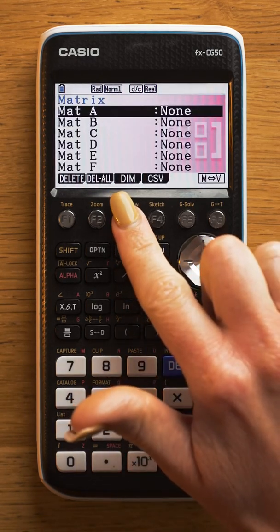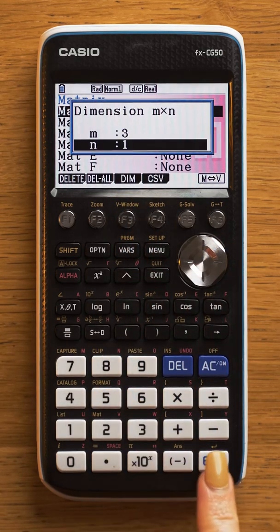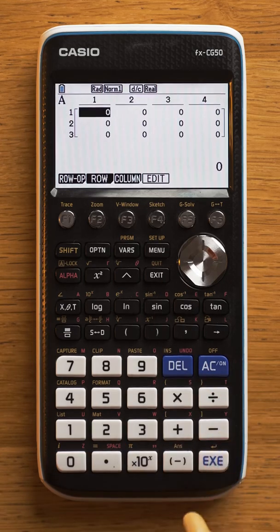Click matrix and enter the dimension. For this example, I'm going to have three rows and four columns, then click enter.